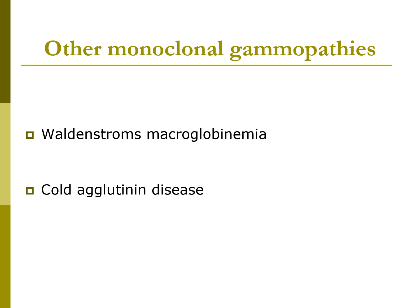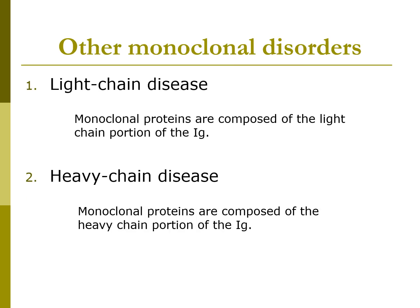Cold agglutinin disease is essentially a micro-obstruction of the circulatory system, sometimes considered a hemolytic anemia reactive with cold autoantibodies. Other monoclonal disorders include light chain disease and heavy chain disease. Signs and symptoms of these two types include weakness, fever, anemia, and patients may have enlarged spleen, enlarged liver, and an increased number of bacterial infections.